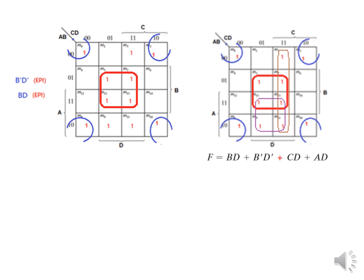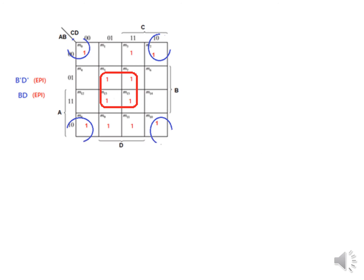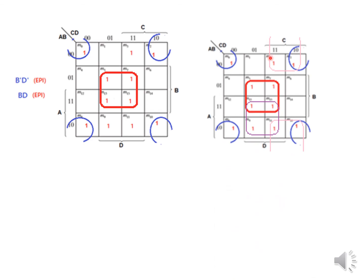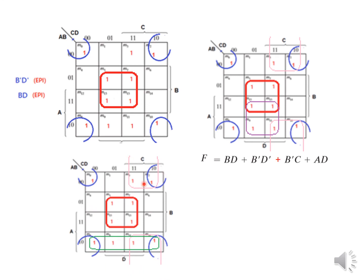That was one option. In the second option, these two cells are covered by one grouping but the last one is covered by the green-line grouping. A third option has the pink group covering two cells and magenta covering the remaining one. A fourth option has the pink covering two cells and the green covering the last one.